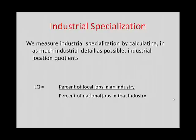The location quotient is simply the percentage of local jobs in an industry divided by that same percentage at the national level. For example, it would be Iowa's percentage of farmers divided by the national percentage of farmers, and that ratio tells us our location quotient.